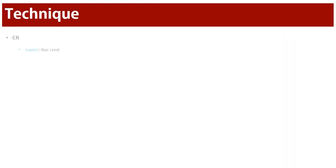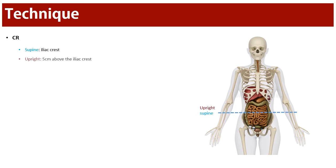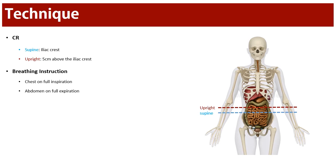Regarding positioning and techniques, these are covered in detail in separate videos on our channel. For the supine abdomen, take the iliac crest as the center of the image to ensure the bladder is included. For the upright film, move the central ray five centimeters above the iliac crest to ensure the diaphragm is visualized, allowing evaluation of any free air. Breathing instructions: the chest x-ray should be taken at the end of full inspiration, and the abdomen film on full expiration.